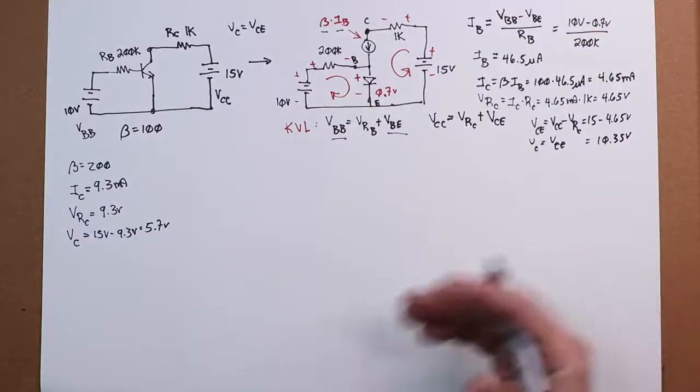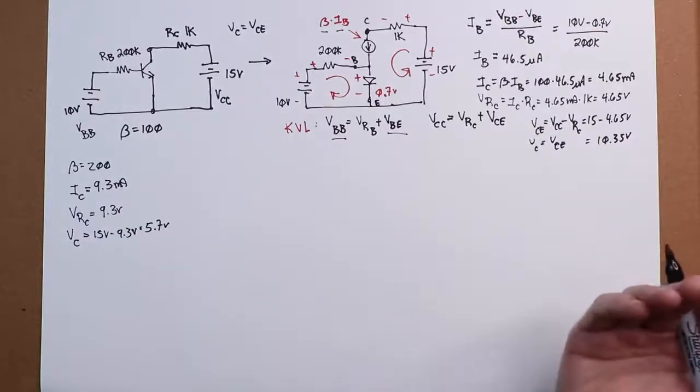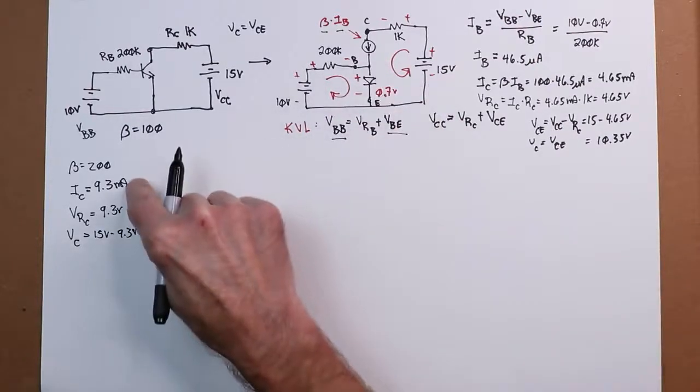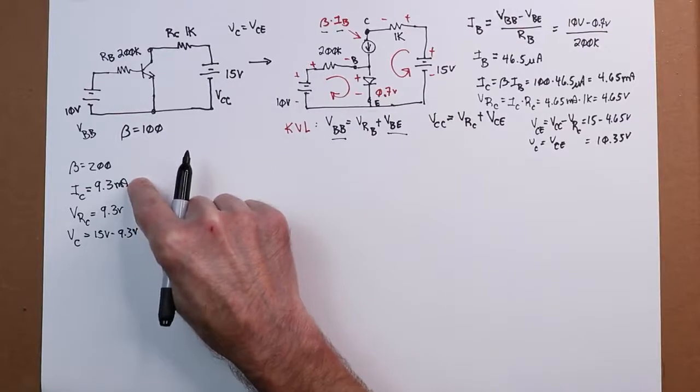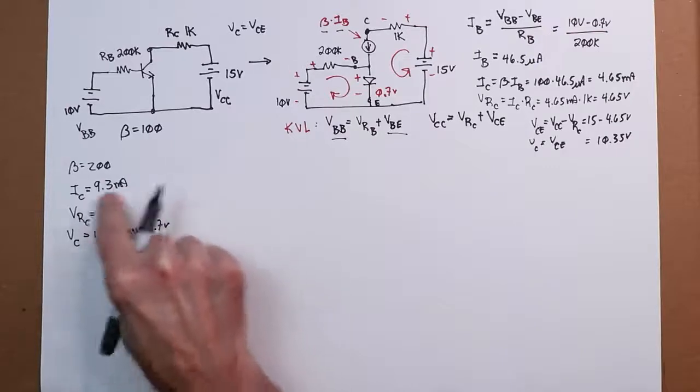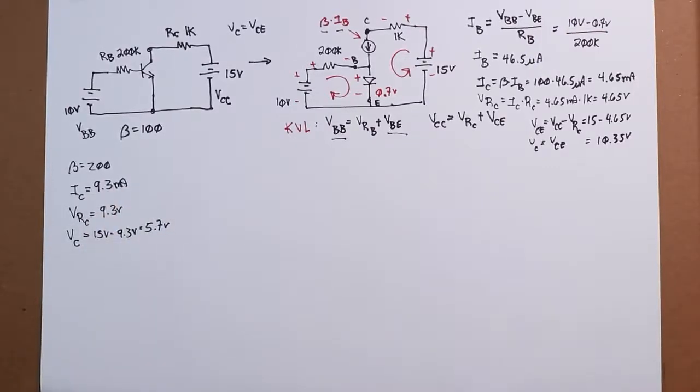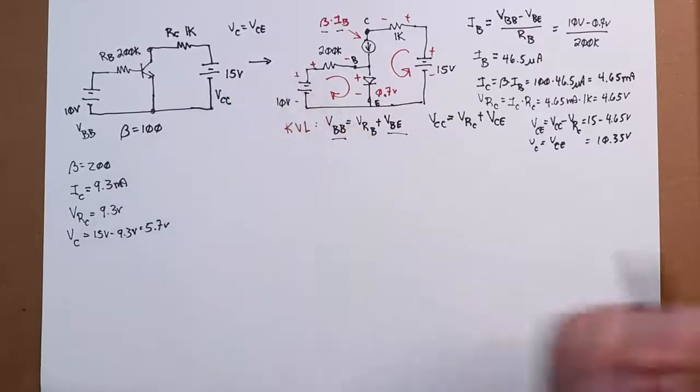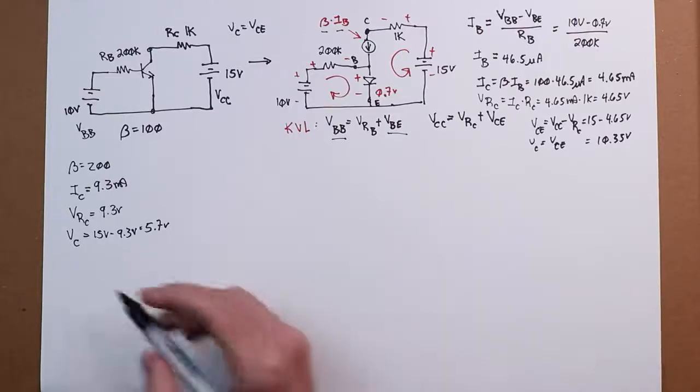How far can we take this? Now if you doubled it again, like you said beta's 400, you would expect this current to double to 18.6. But there's a problem, because if that happens you would now have 18.6 volts across the collector resistor, which can't be. You only have a 15 volt power supply. Where's the extra voltage coming from? So that doesn't really happen. We have to figure out where the ceiling is, where's the limit.